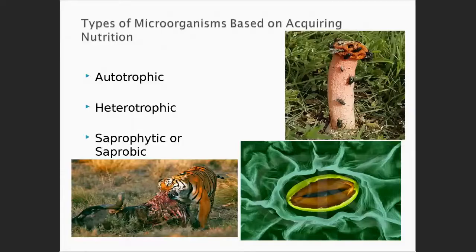So, how organisms — not just microorganisms, but all organisms — obtain nutrients. I've got three images here. This is a mushroom known as a stinkhorn, and it typically shows up in the early parts of spring and then again around the middle to late fall.